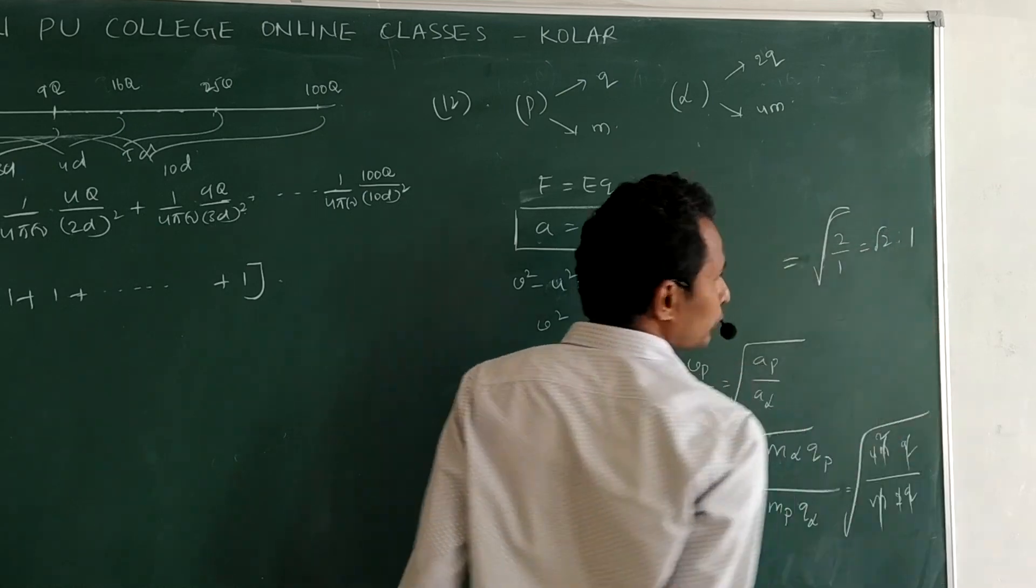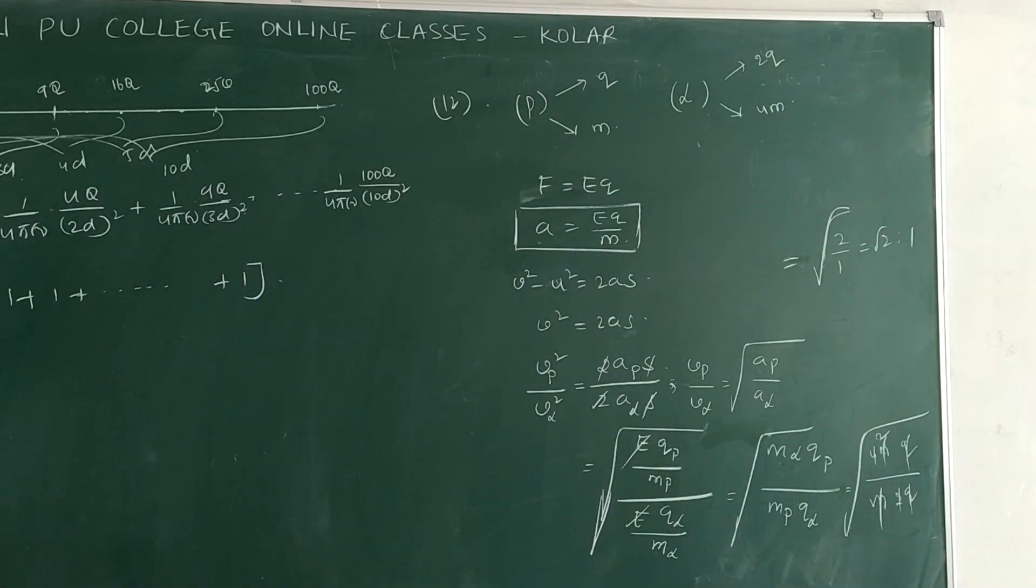Now the answer is root 2 or root of 2 by 1. This is root 2 is 2, 1. Now the option is 2. Second option is correct.